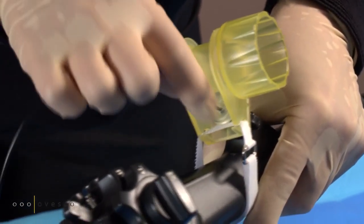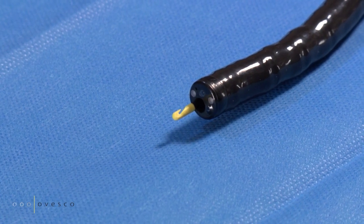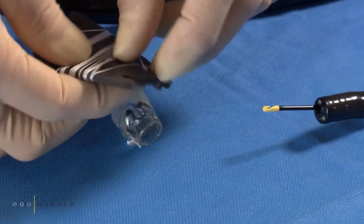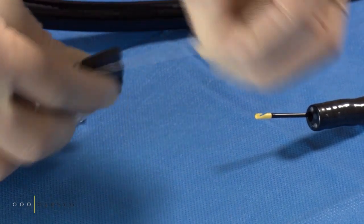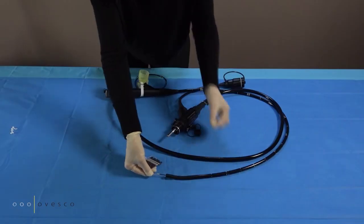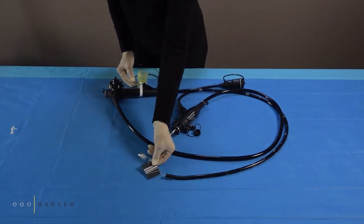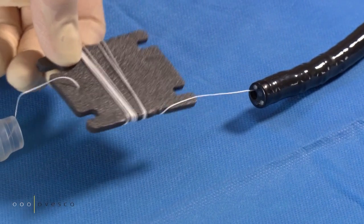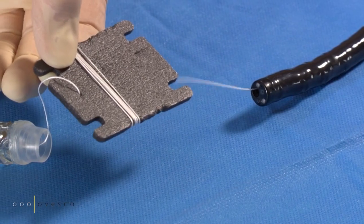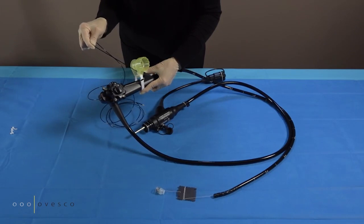Insert the thread retriever into the working channel, then into the endoscope's handhold. Follow through the channel.